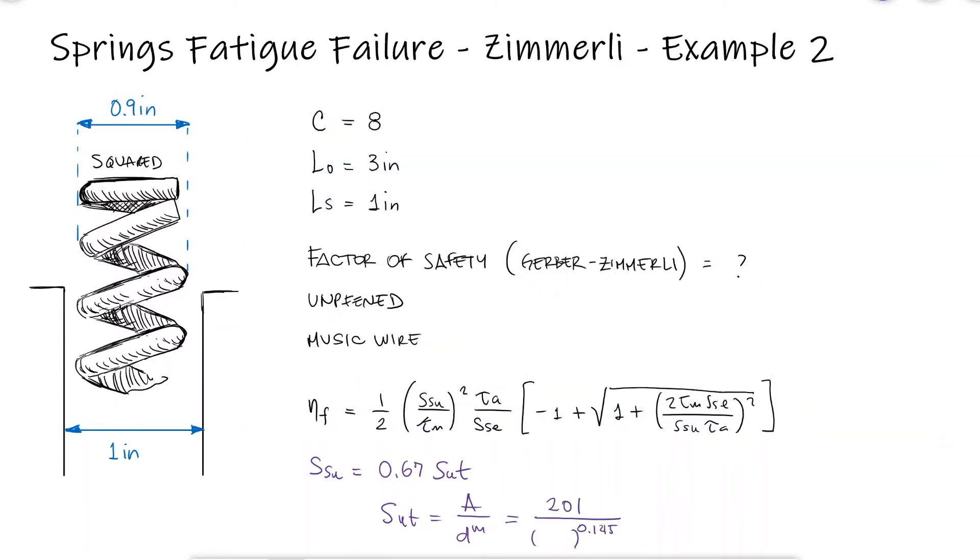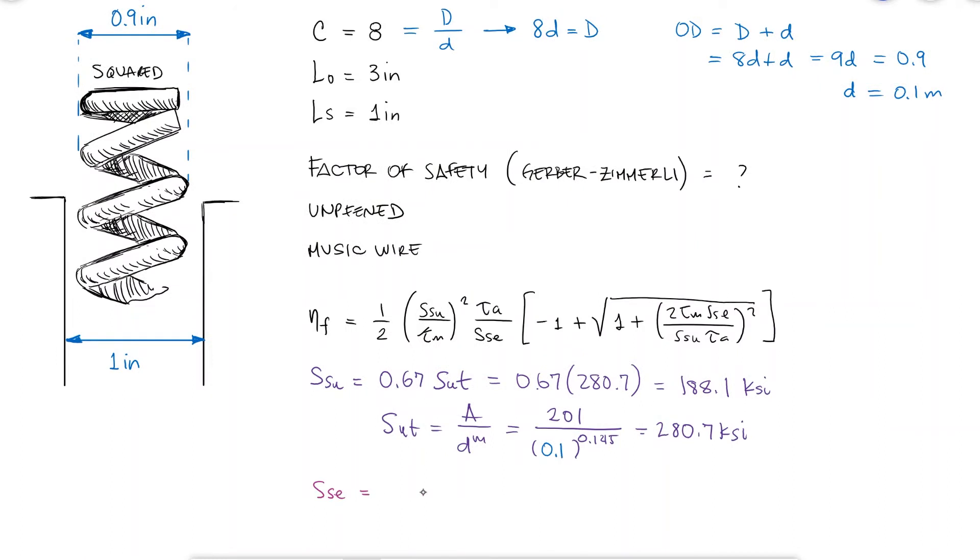The wire diameter can be found from the spring index and the relationship between the outer diameter and the coil diameter. This allows us to calculate the ultimate tensile strength and the torsional modulus of rupture. Using the Zimmerle data and this torsional modulus of rupture, we find the shearing endurance strength. And remember, the expression to find the shearing endurance limit would change according to the criterion I'm following, not just the expression for the factor of safety.